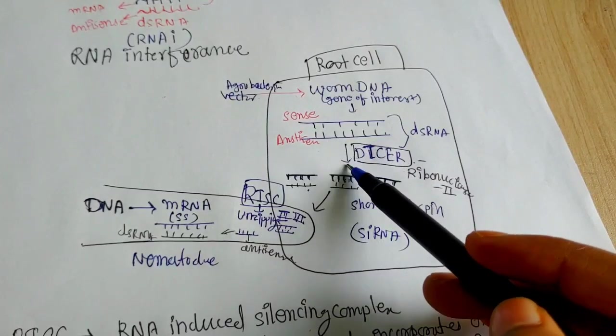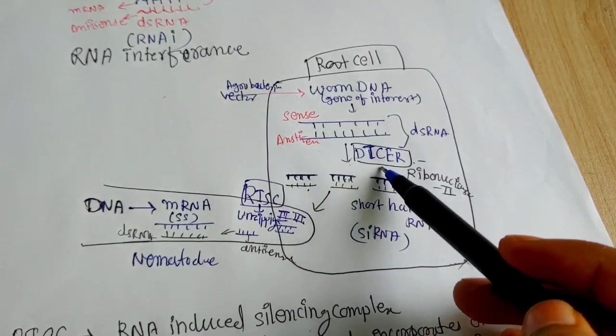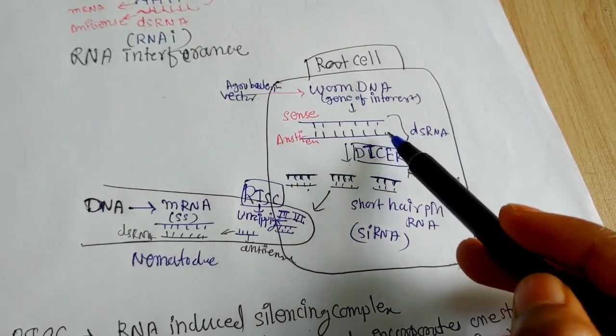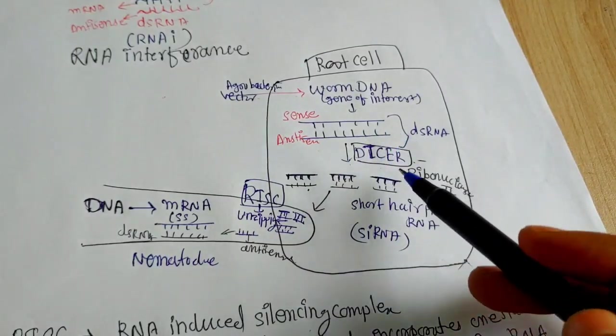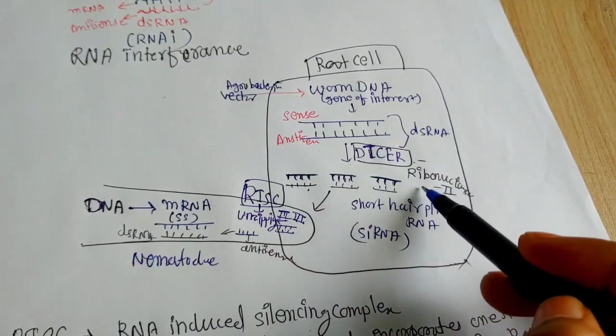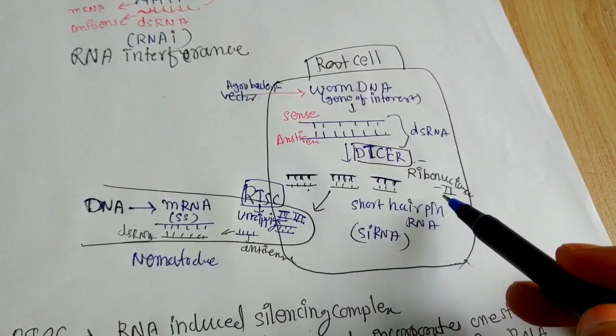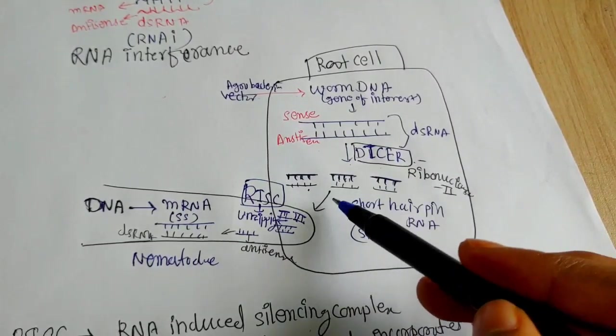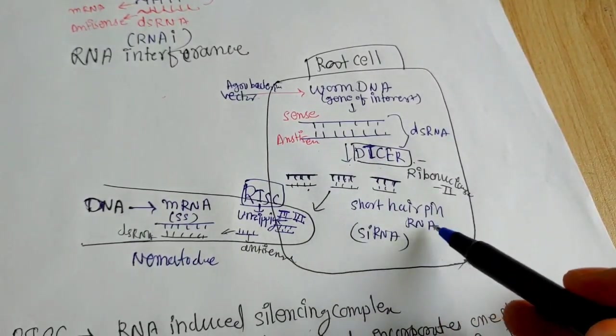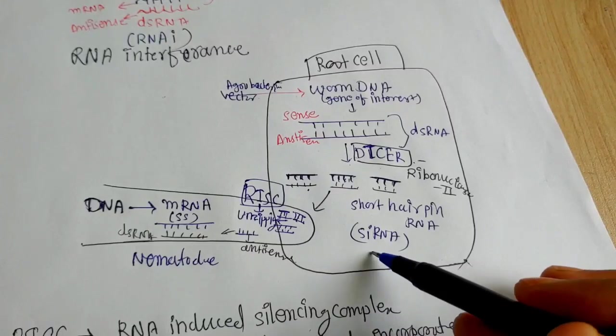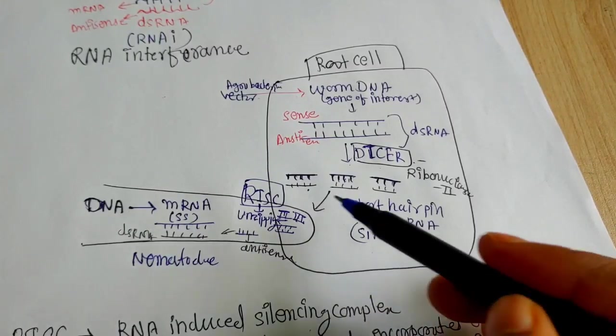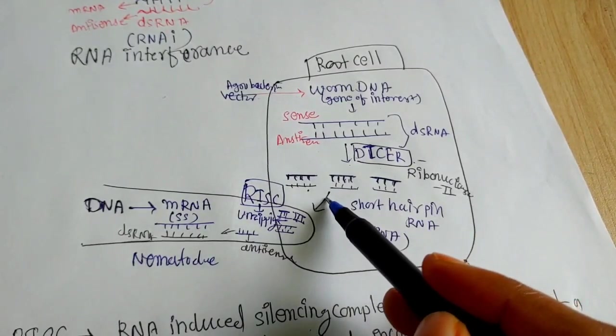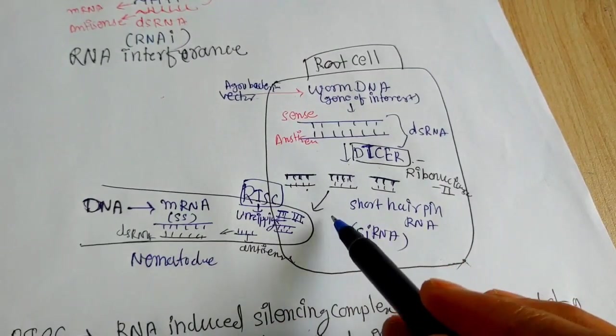And this double-stranded RNA, the root cells have dicer to cut this double-stranded RNA into small fragments by activating an enzyme ribonuclease. And you will get short hairpin-like RNAs, we call it small interfering RNA. These interfering RNAs are present in the root cell now.